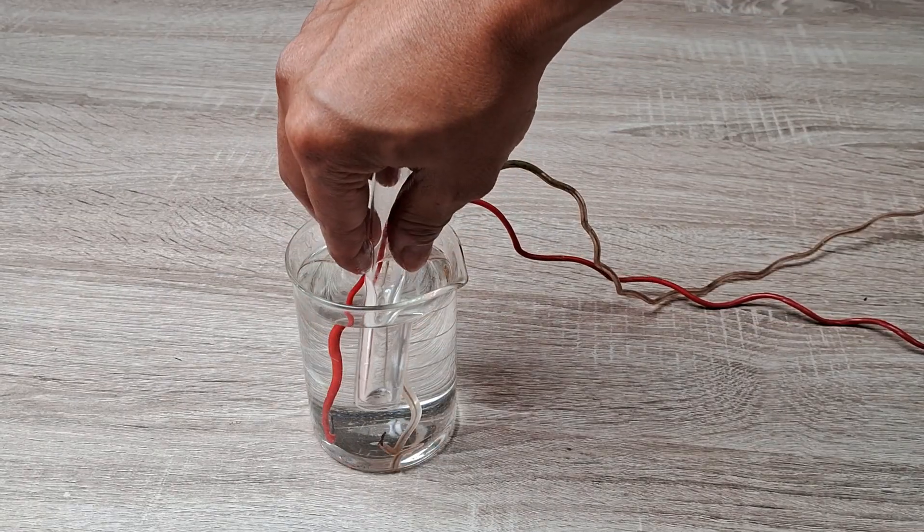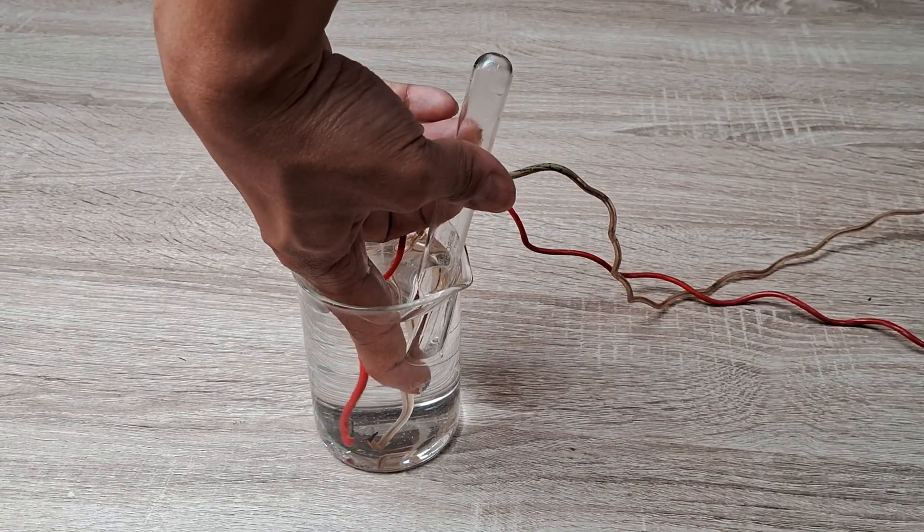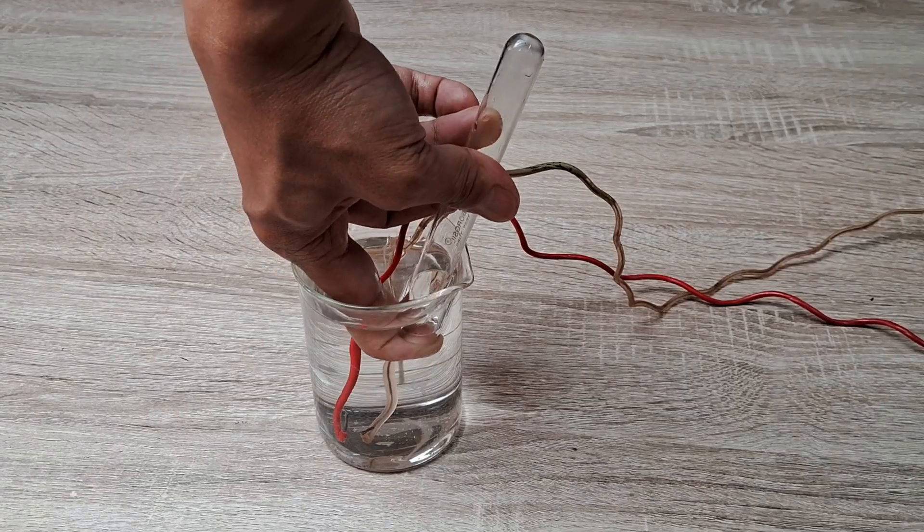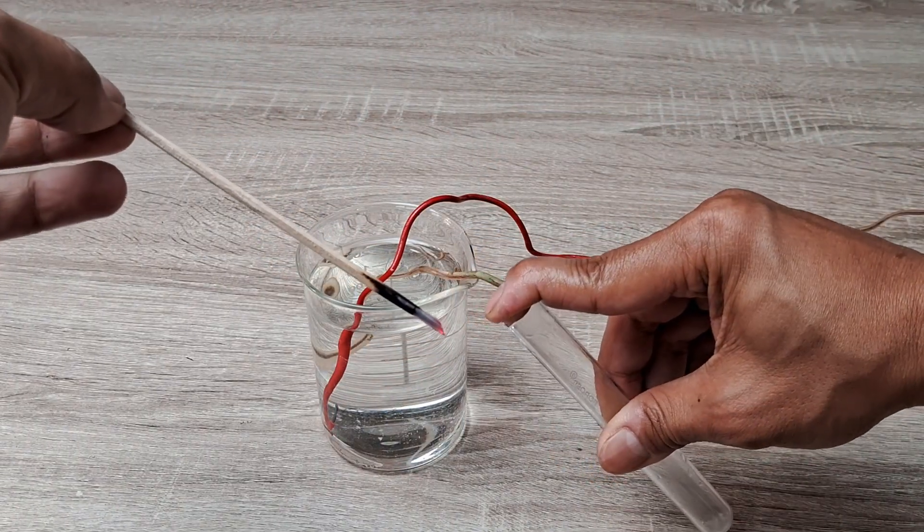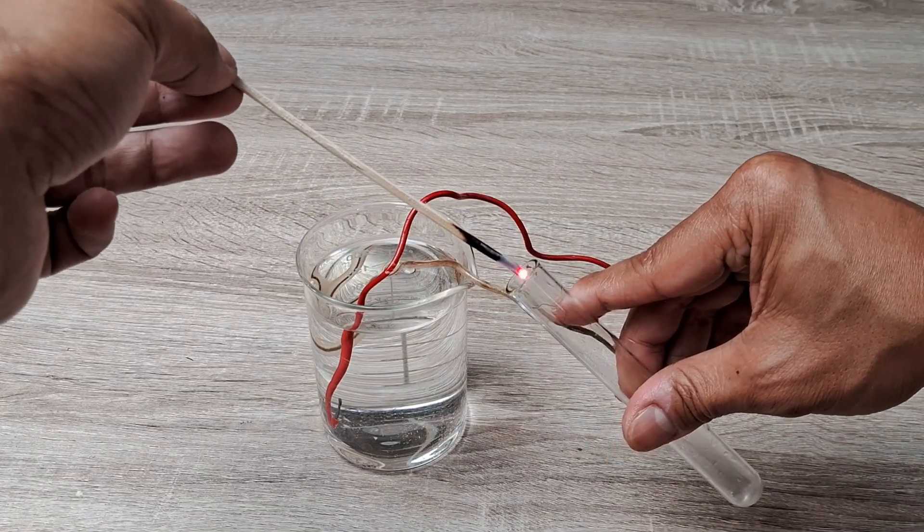Do the same with the anode tube. Once it fills up completely, you will notice that when a glowing splint is introduced into the tube, the glow intensifies and may even reignite with a brilliant flame.